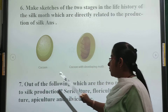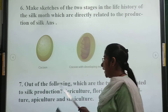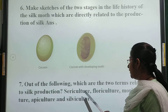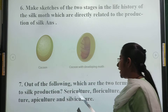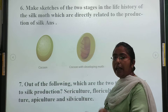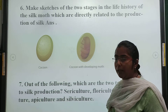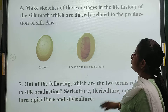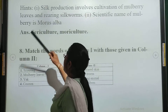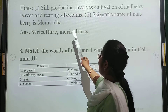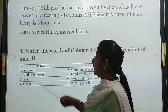Question number 7: out of the following, which are the two terms related to silk fiber? The terms given are: sericulture, poultry culture, moriculture, pisciculture, and apiculture. The answer is sericulture and moriculture — these are the two terms which are related to silk fiber.